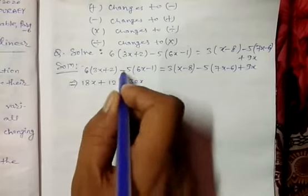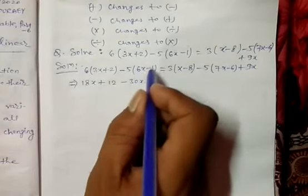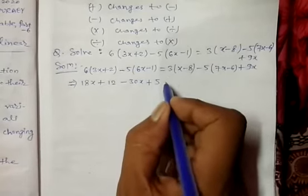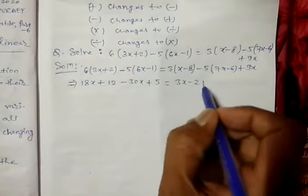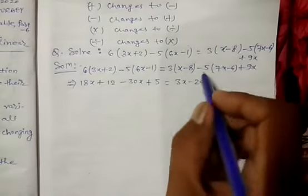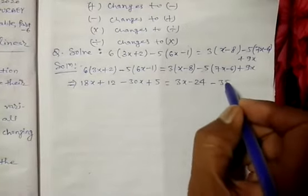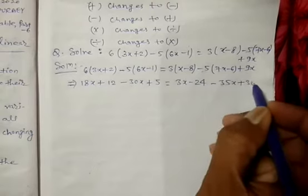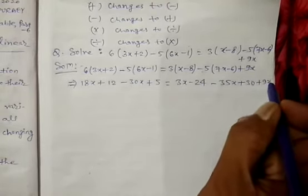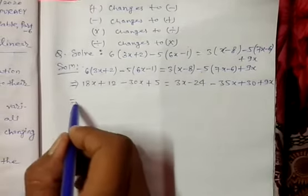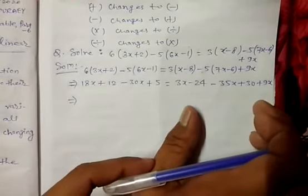First we multiply in the brackets. 6 times 3x plus 2 gives 18x + 12. Then minus 5 times 6x minus 1 gives minus 30x plus 5. On the right side, 3 times x minus 8 gives 3x - 24, then minus 5 times 7x minus 6 gives minus 35x + 30, plus 9x.